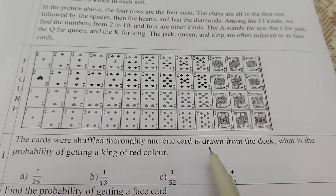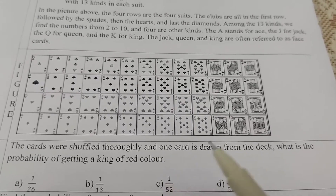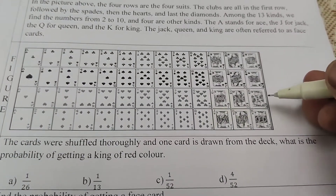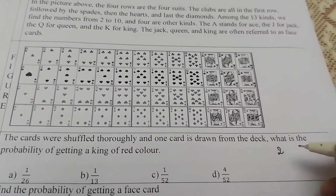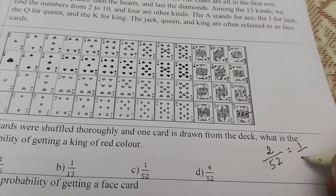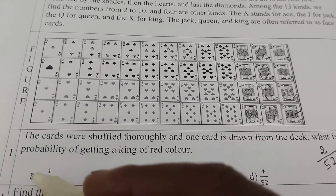Question 1: The cards are shuffled and one card is drawn from the deck. What is the probability of getting a king of red color? King of red color means only two cards — one from hearts and one from diamonds. So favorable outcomes = 2, total cards = 52. The probability, written in lowest form, is 1 by 26.